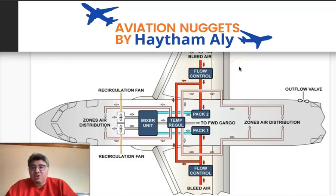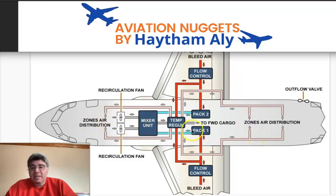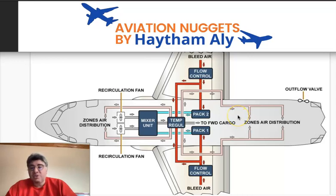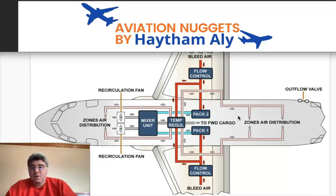In this session I'm going to speak about Chapter 21, the air conditioning system. This is the basic schematic for Chapter 21 — how the flight crew and passengers feel comfortable regarding temperature and air freshness, having good fresh air and a comfortable temperature within the cabin.